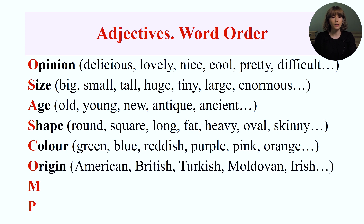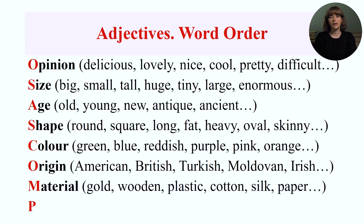Origin adjectives tell us where something is from or was created. Examples: American, British, Indian, Turkish, Moldovan, Irish. Material adjectives describe what something is made of or constructed from. Examples: gold, wooden, plastic, synthetic, silk, paper, cotton, silver.